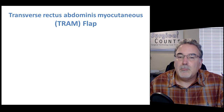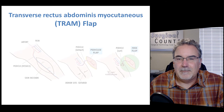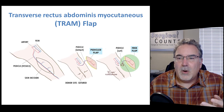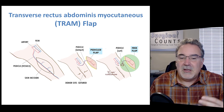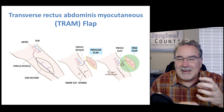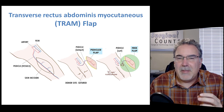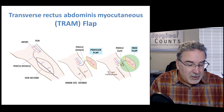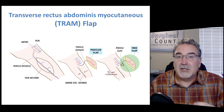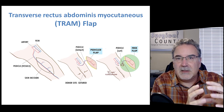A TRAM flap stands for transverse rectus abdominis myocutaneous flap. First, let's discuss flap types. A free flap is like the skin grafts we discussed — taking a piece of skin and moving it to a different section with nothing connecting it. A pedicled flap leaves the connection to the tissue — we leave the blood vessels and nerves in place but still move that piece of skin to a different location. In a TRAM flap, we're often doing a pedicled flap, removing skin and even some muscle from one area and moving it up into the location of the breast.